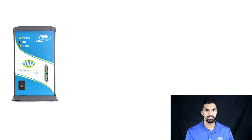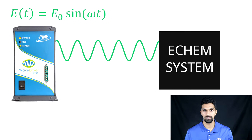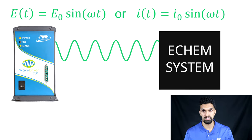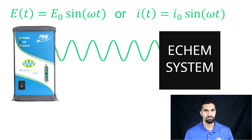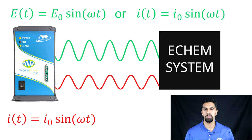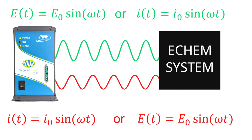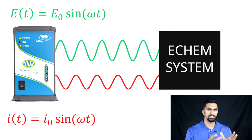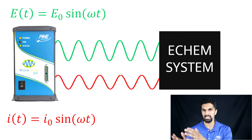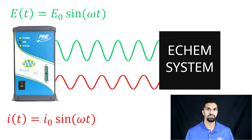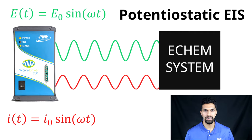So what exactly is electrochemical impedance spectroscopy? In short, EIS is a technique where a potentiostat applies a sinusoidal potential, or a sinusoidal current, to an electrochemical system, and we measure a corresponding sinusoidal current or sinusoidal potential out. Taking the case where we apply a sinusoidal potential and measure a sinusoidal current — this is referred to as potentiostatic EIS.